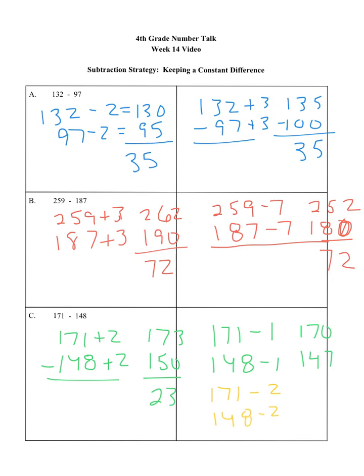Because now, 171 minus 2 is 169. 148, lose 2 is 146. And if you notice, there's no need to borrow. 9 minus 6, 16, well, 6 minus 4.